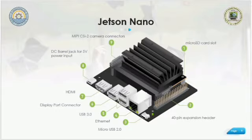We can see it has a micro SD slot, a 40-pin expansion header, and several ports such as Ethernet, USB, DB port, HDMI, and two CSI camera connectors. We can power up the Jetson Nano by two sources: micro USB 2.0 or DC barrel jack.